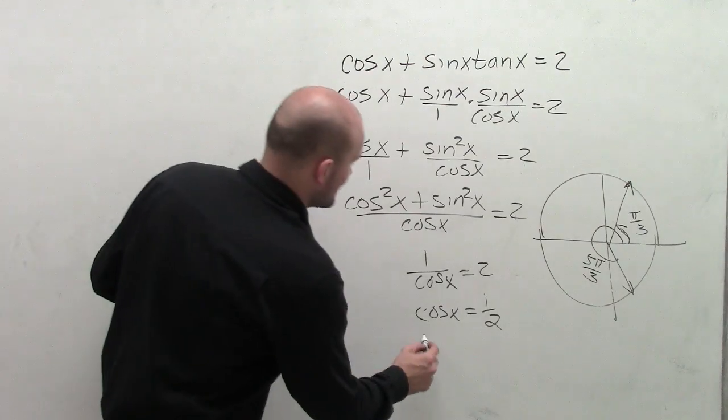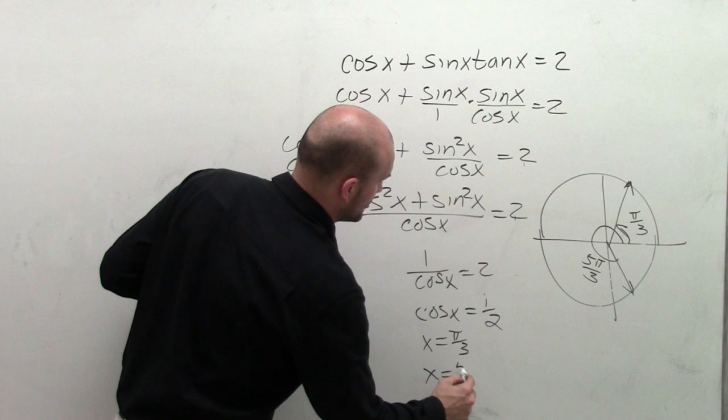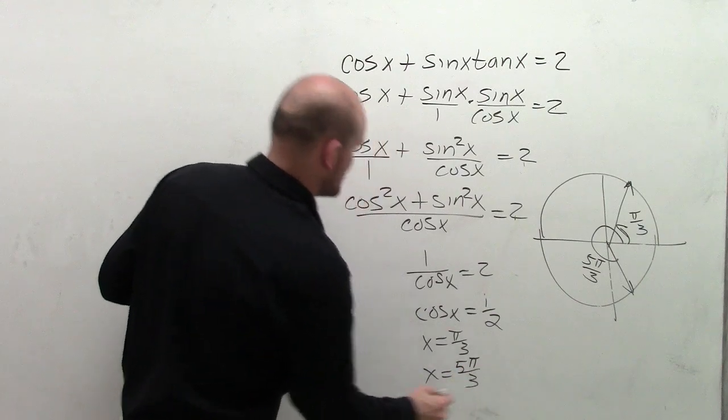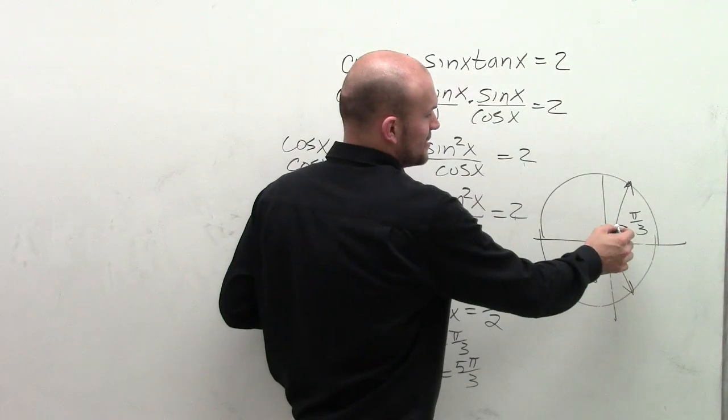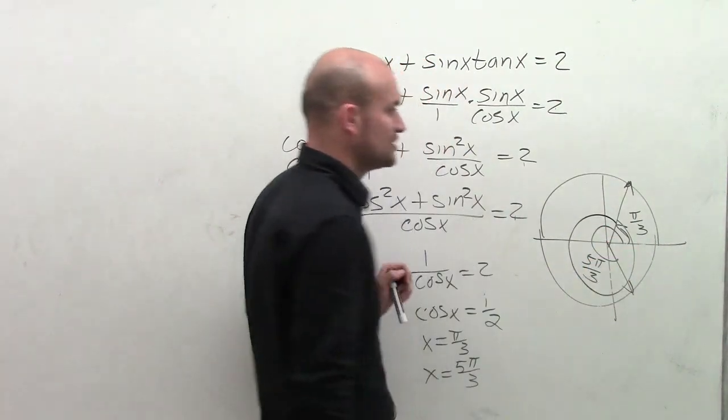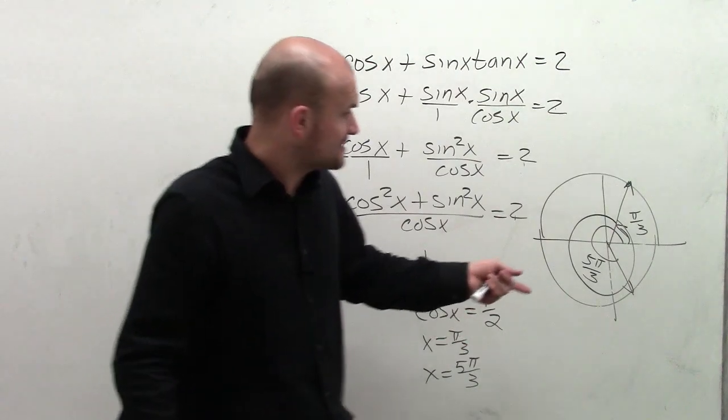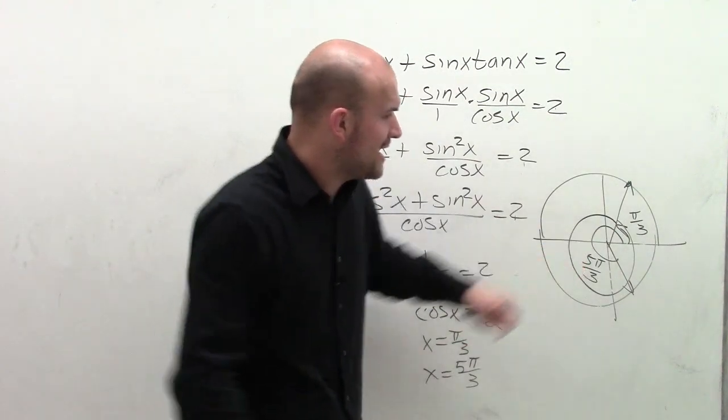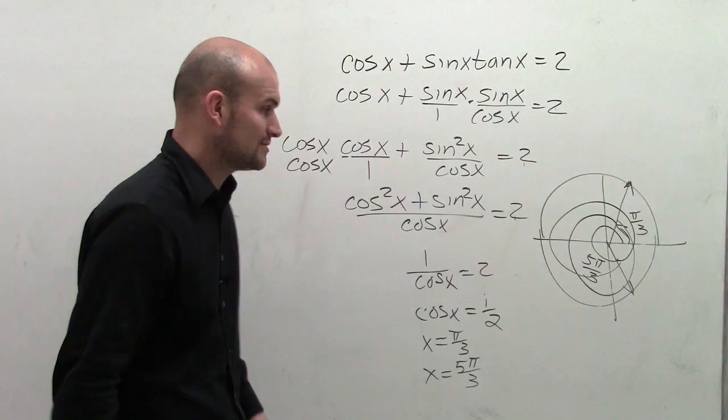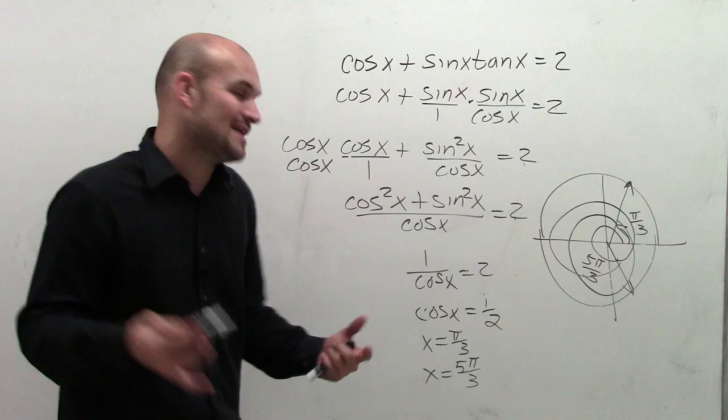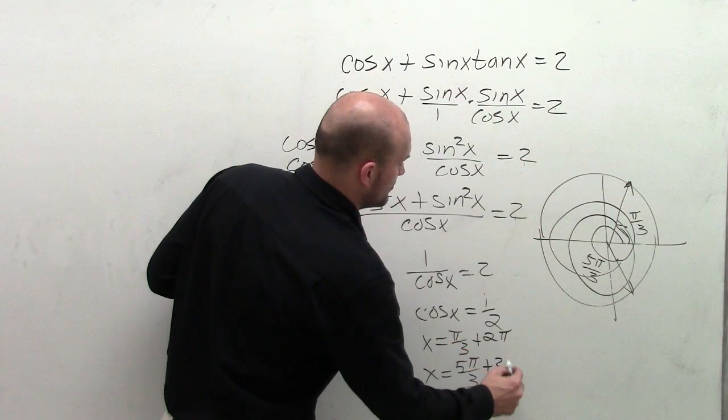So I can say x equals pi thirds and x equals 5 pi thirds. But I'm asked to find all of the solutions. So not just pi thirds, but when I go around my solution again by using a coterminal angle. And then not just 5 pi over 3, but when I go over again by using my coterminal angles. So to get to that next angle, I have to add a revolution of 2 pi. So I'm going to add 2 pi plus 2 pi.